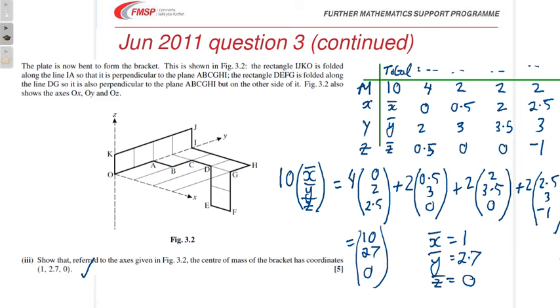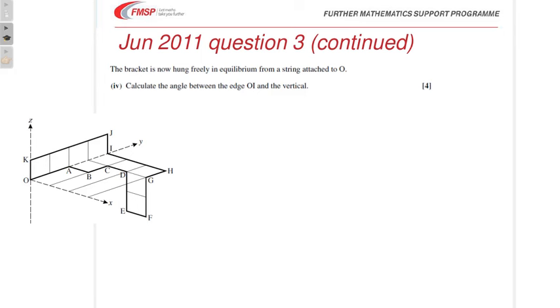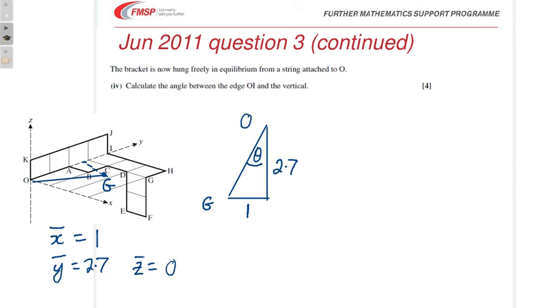They then go on for the last bit to ask you about how it'll hang if it's hung from a string attached to O. Now, this is one of those questions where you know that the vertical will be from O through the centre of mass. So if I draw this... oops, oh, what's happening? Right, I finally managed to draw the lines. It'll hang from O with the centre of mass vertically below O, but more to the point, because the centre of mass of this plane shape is in the xy plane, then the vertical will be this line, OG, in this plane here, because the z-bar is 0.